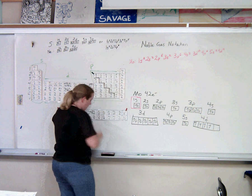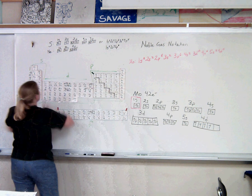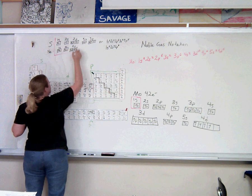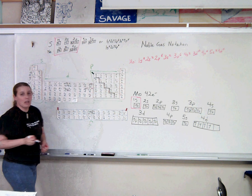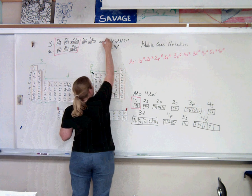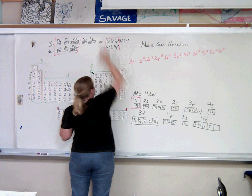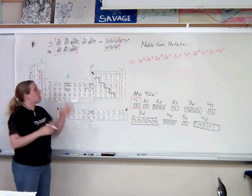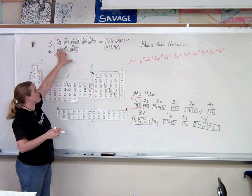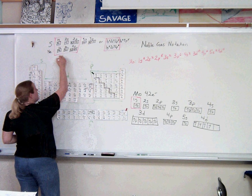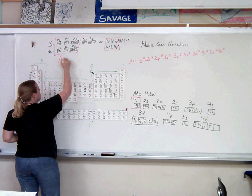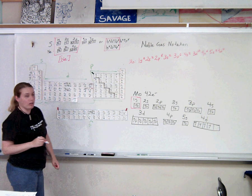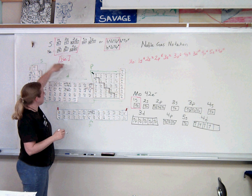Notice that the first part of sulfur is identical to the first part of neon in both the orbital diagrams and in the electron configuration. So we're going to use the symbol for neon to stand for all of this. We're just going to say, in brackets, Ne. So that means this is right here.